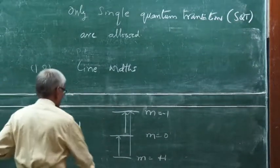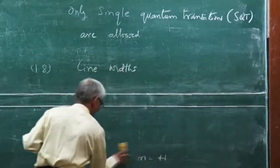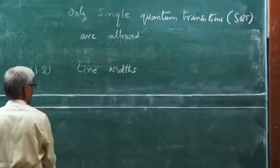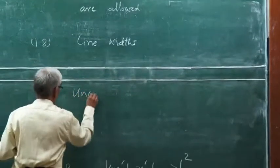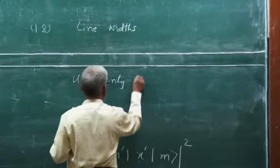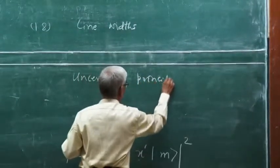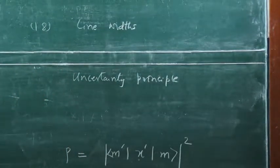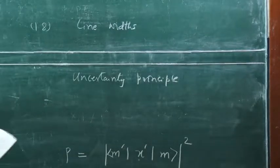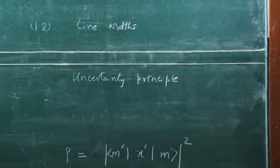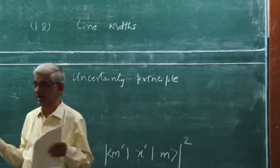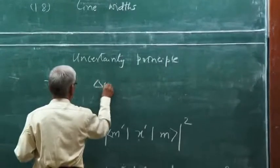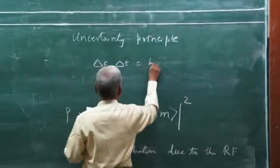So the answer to this lies, once again, in quantum mechanics and that is the uncertainty principle. This is defined in various different ways, depending upon the observables you choose. In this case, we choose energy and time. We can also do it with momentum and x coordinates. We choose here energy and time. This is equal to h.